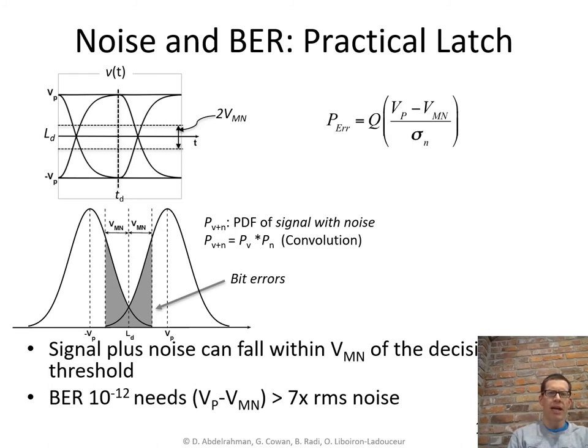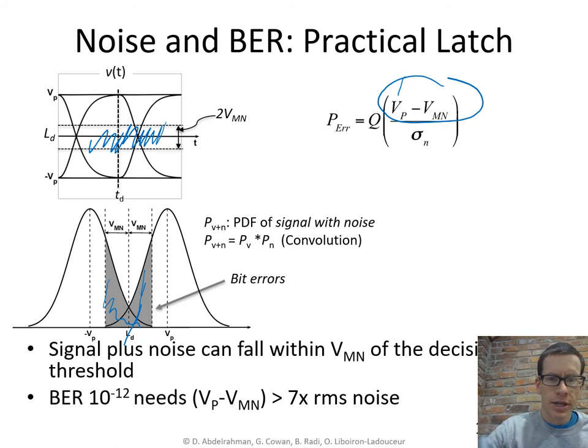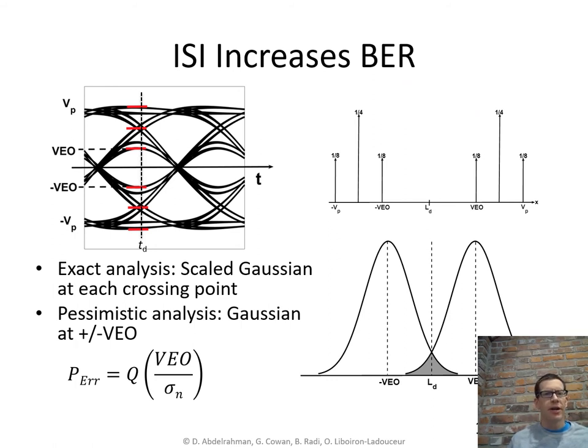If we want to take into account a practical latch so for a practical latch we're going to assume that there's some region in the middle around the decision threshold where if the signal falls we're going to get an error. So now the area under the curve that gives an error gets moved out from the decision threshold by this vmin value. We can simply reevaluate the q function where our argument is it's not vp vp was the distance from the mean to the threshold instead it's going to be the distance from the peak value to the sort of danger zone for the latch.